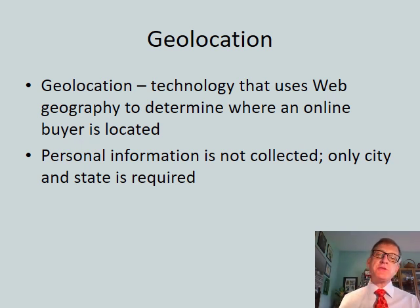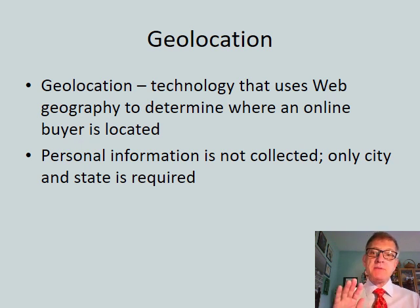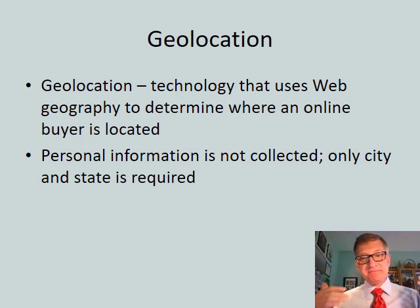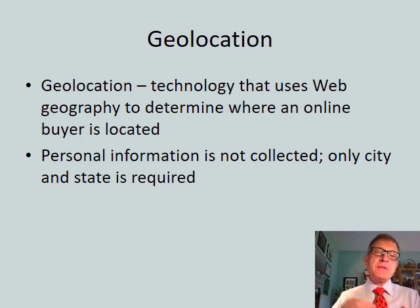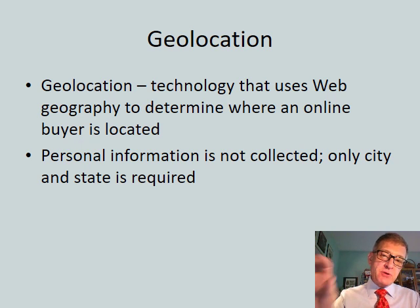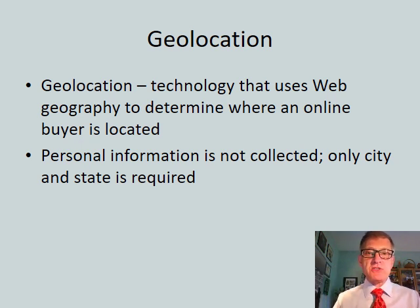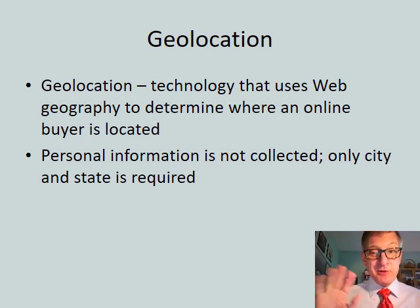Geolocation is technology that uses web geography to determine where an online buyer is located. So if I'm on my phone in Dusseldorf, Germany, and I want to find a grocery store, without geolocation they might show me stores back in Columbus, Ohio where I live. Geolocation knows what phone I'm on and where I am, and pushes the relevant ads or data so I know where to find that store nearby. Often it only needs city and state, though a phone can provide much more information.